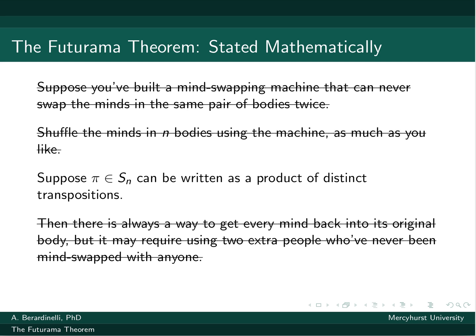So then the conclusion is that we can always get the minds back into their original bodies, possibly using two extra people. And mathematically, that looks like we have a permutation of n plus two things, or objects. And so originally we had n bodies, now we're adding two, Sn plus two.